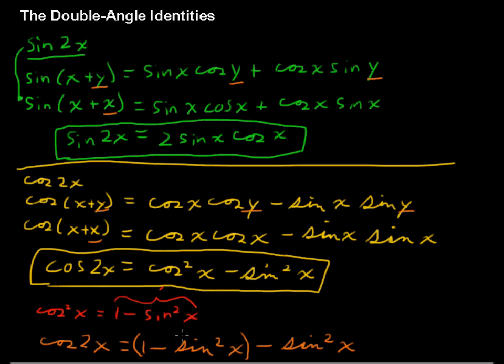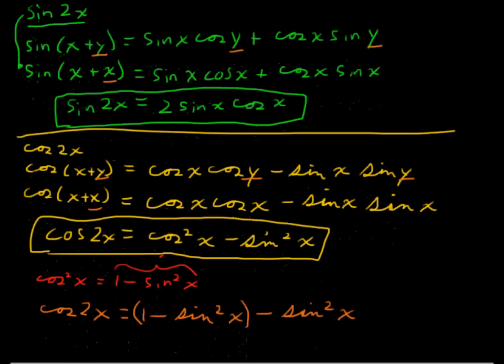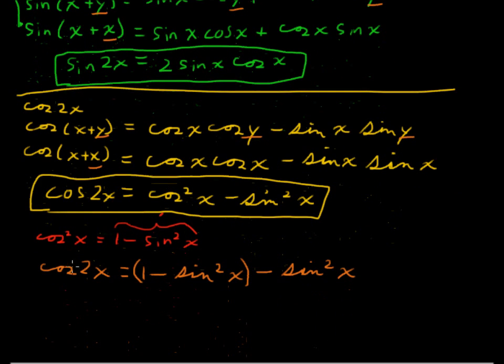And this is what I've plugged in here, what's in red. That's what I have in parentheses there. And then you could just combine the negative sin squared x and another negative sin squared x. So that would give you, let's scroll down a little bit just to give a little bit more room. That would give you cos of 2x equals 1 minus 2 sin squared of x.